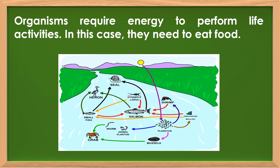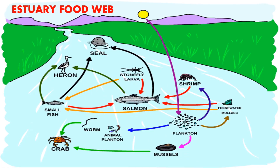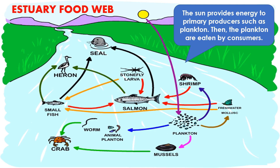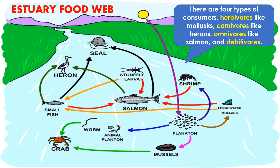Organisms require energy to perform life activities; they need to eat food. Let us analyze the figure and observe the pattern of how organisms interact and get energy. This is an estuary food web. A food web is an interlocked pattern of food chains that consist of producers and consumers. The sun provides energy to primary producers such as plankton, which are then eaten by consumers. There are four types of consumers: herbivores like mollusk, carnivores like herons, omnivores like salmon, and detritivores.